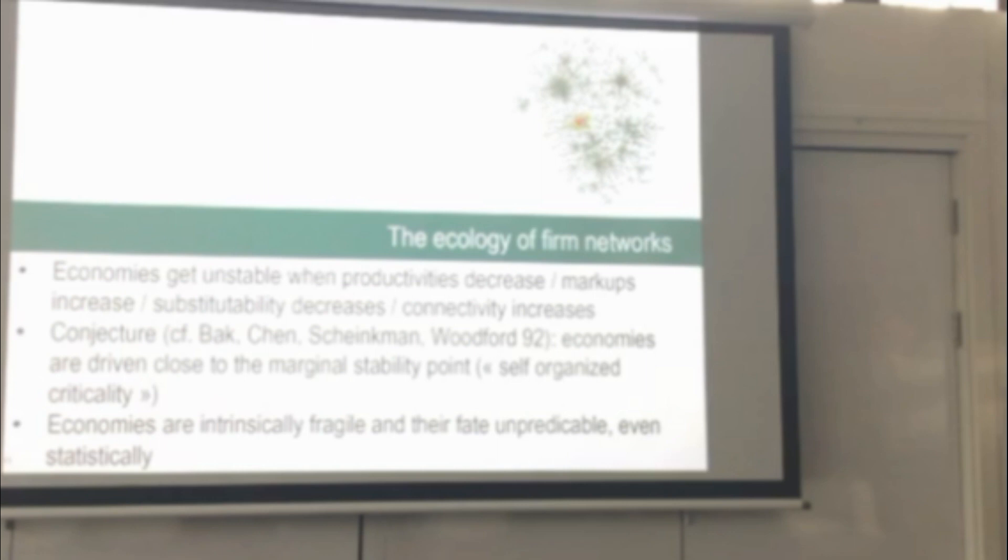So in this model, you find that economies get unstable when productivities decrease, markups increase, substitutability decreases, connectivity increases, or actually size increases, like in May's example. And the conjecture that comes out very naturally from this model is that economies may be driven spontaneously to this marginal stability point that I talked about in the ecology context. And actually, this idea was first promoted in the economics literature in a paper by Bak, Chen, Scheinkman, and Woodford in 1992 within a model that I think was so unrealistic that nobody paid really attention. But that's the scenario that in physics is called self-organized criticality. That spontaneously systems by their own device tend to go right at the border of stability.